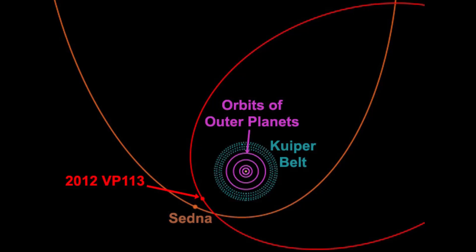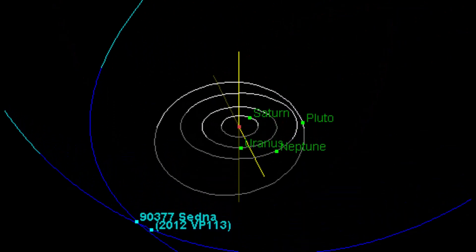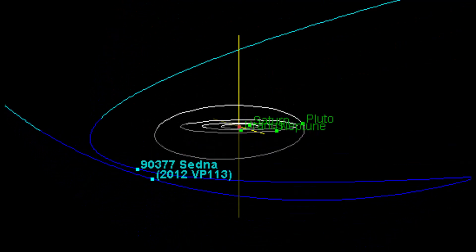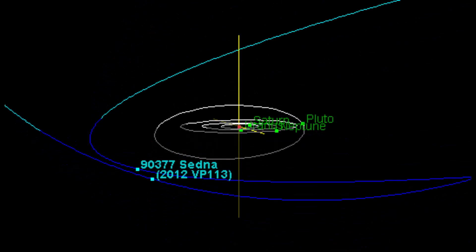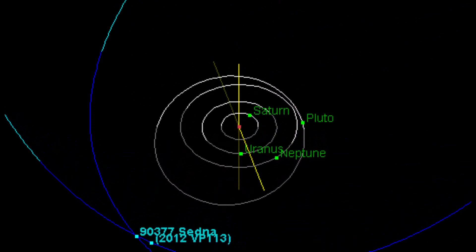Sedna, discovered in 2003, takes an astounding 11,400 years to complete one orbit around the Sun. Similarly, 2012 VP113, discovered in 2012, follows an equally bizarre path.